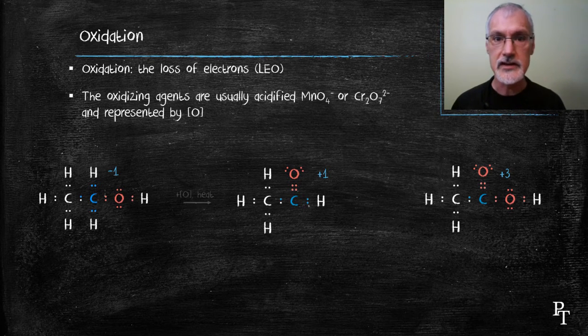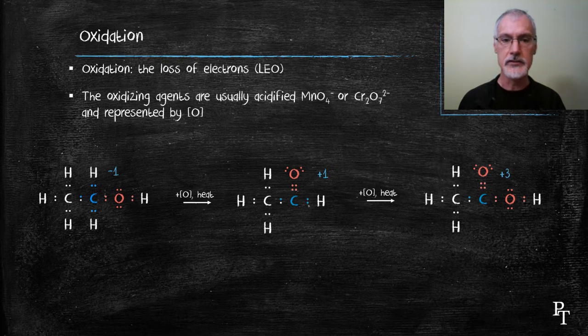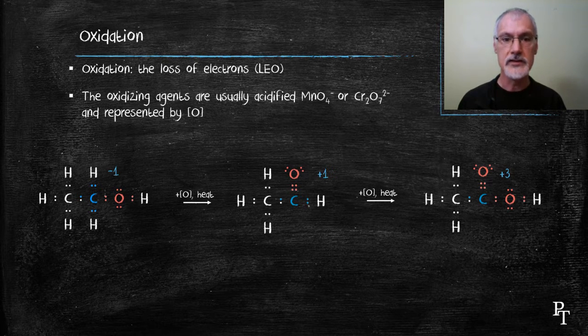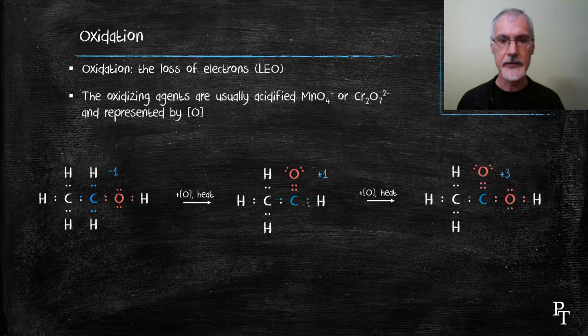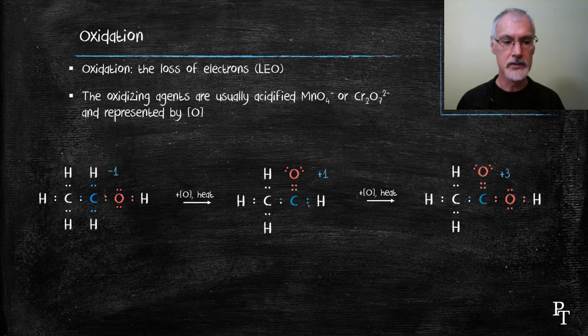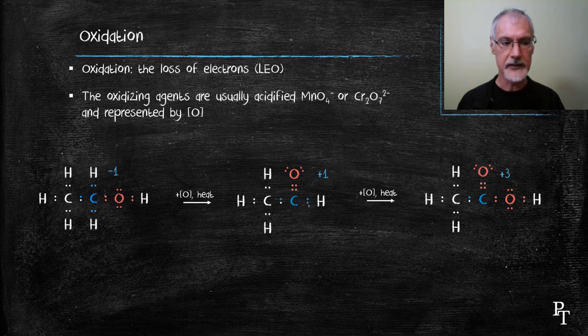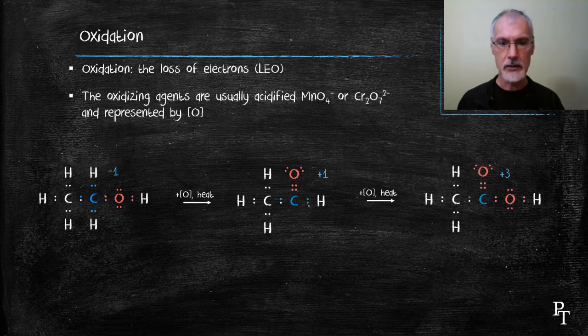In order to cause oxidation, we need to introduce an oxidizing agent, and some of the most common ones include the manganate ion or the dichromate ion present in acids. We're going to represent oxidizing agents just by the O in brackets, and this also requires some heat to take place.